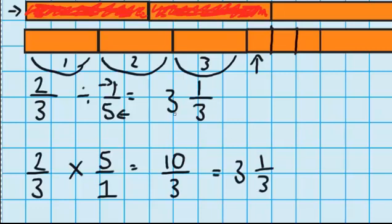And we know that ten thirds is the same as three wholes and one third. So we've got the same answer.